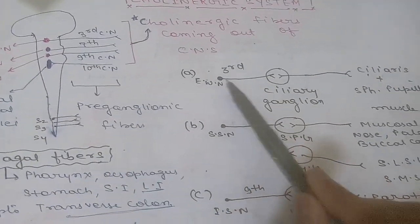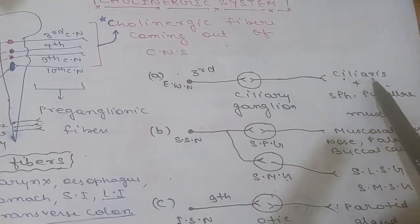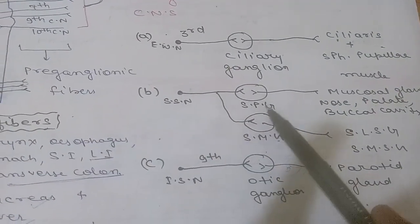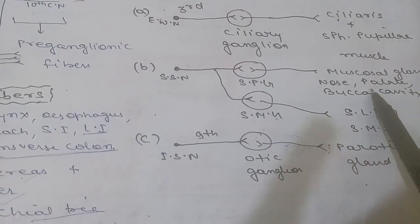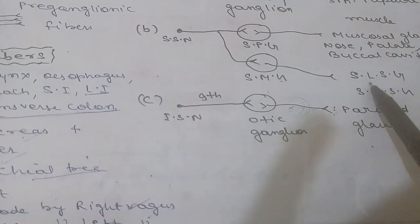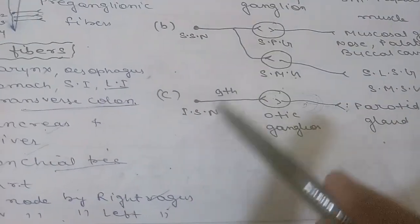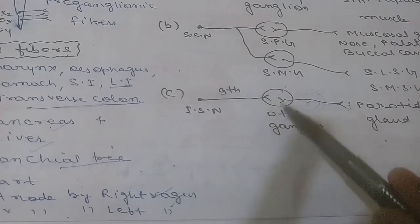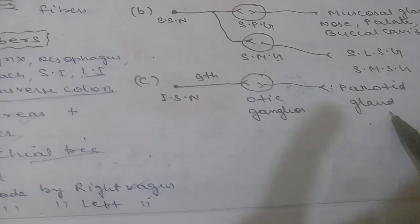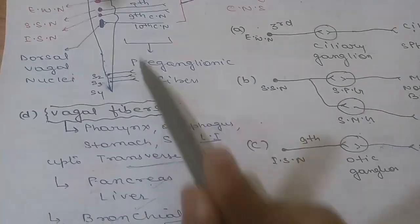The 3rd cranial nerve connects to the ciliary ganglion, with post-ganglionic cholinergic fibers supplying the ciliary muscle and sphincter pupillae. The superior salivatory nucleus connects to the sphenopalatine ganglion supplying mucosal glands of the nose, palate, and buccal cavity, and a collateral branch to the submandibular ganglion supplying the sublingual and submandibular salivary glands. The inferior salivatory nucleus via the 9th cranial nerve connects to the otic ganglion supplying the parotid gland.